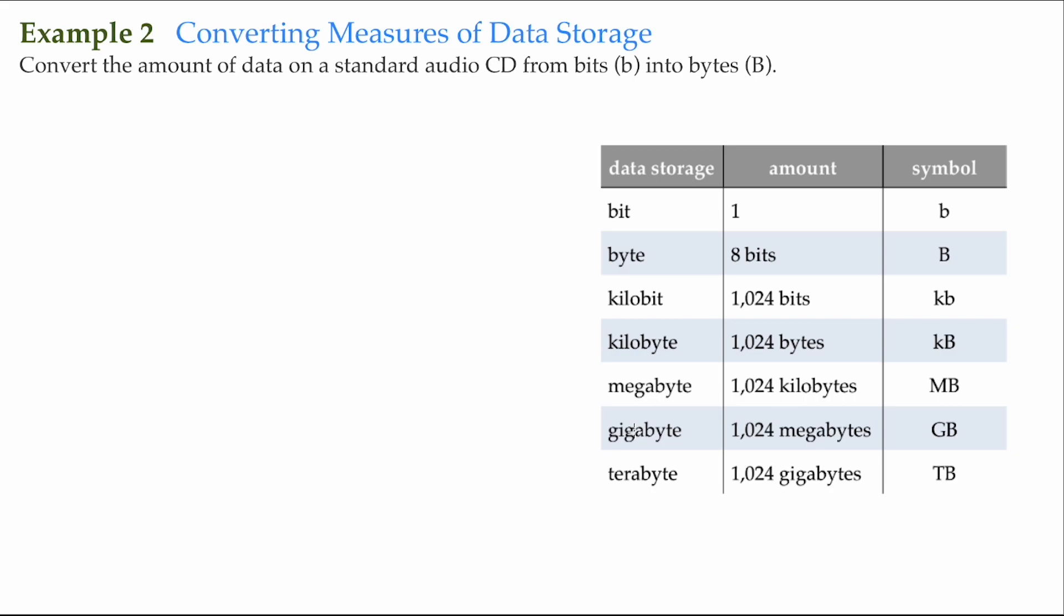So we know from the previous example that for a CD, a CD contains 6,265,728,000 bits. I'm just going to put it in right here, bits of data.